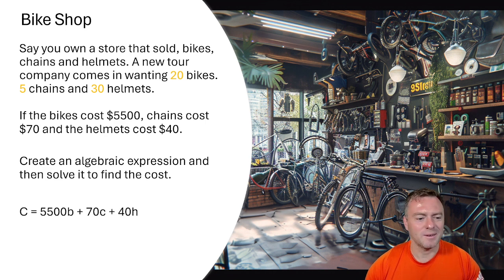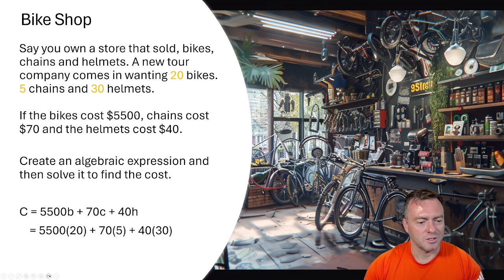Cool. So what you should have found something like this. I did it in terms of the cost. So the cost is equal to 5,500B plus 70C plus 40H. And then you substitute in the values that you know. So you know that it's 20 bikes, 5 chains and 30 helmets.